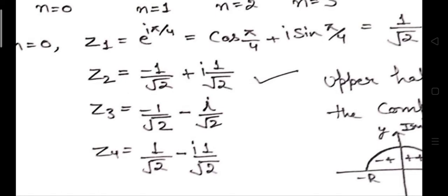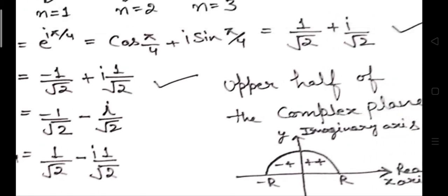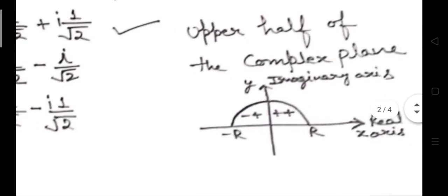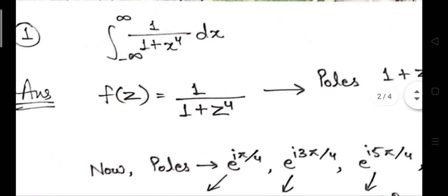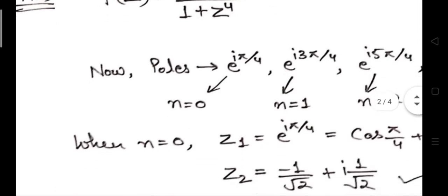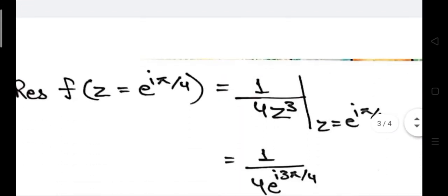After finding z1, z2, z3, z4 values: when both real and imaginary parts are positive, the pole lies in the first quadrant. When the real part is negative and imaginary part is positive, the pole lies in the second quadrant, which also lies in the upper half of the complex plane. For integration limits from minus infinity to plus infinity, we consider only poles lying in the upper half of the complex plane or on the purely real axis — so only the first two poles are considered.